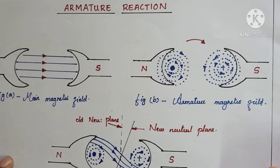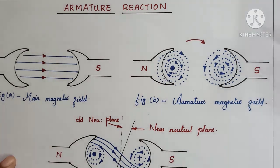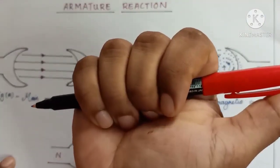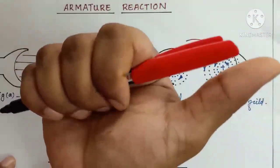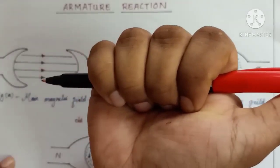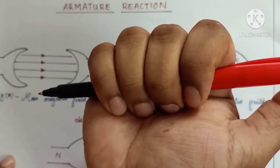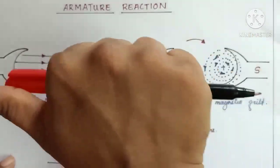In figure B you can see the armature magnetic field. Whenever the machine gets loaded, armature current will start flowing through the armature, and the current through this armature will create a rotating magnetic field around the conductor. We can understand this using Maxwell's corkscrew rule. According to him, if the marker represents the conductor, then the thumb represents the direction of current and the curled fingers represent the magnetic field around the conductor.